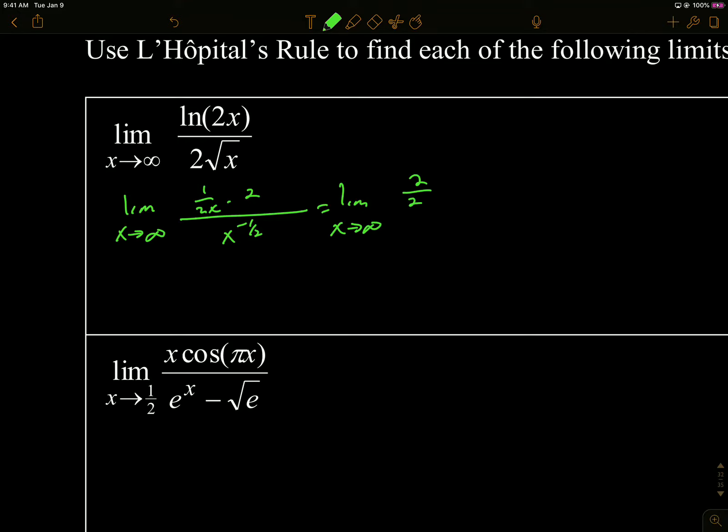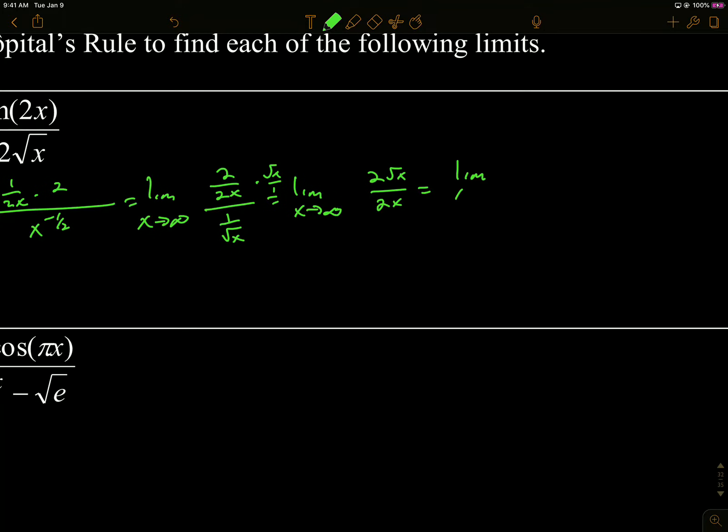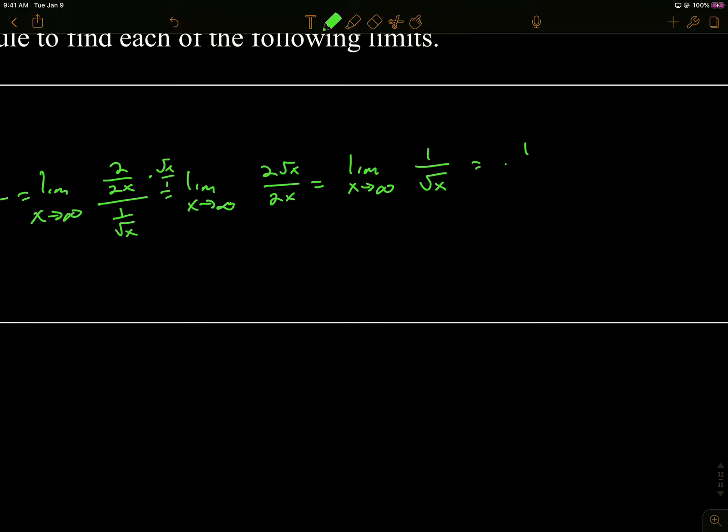Two over 2x over one over root x, which is going to be the limit as x approaches infinity of, I'm going to multiply by the reciprocal, so 2 root x over 2x. So that's going to be the limit as x goes to infinity of one over root x. And then if I plug in infinity, I'm getting one over infinity, so that goes to zero.